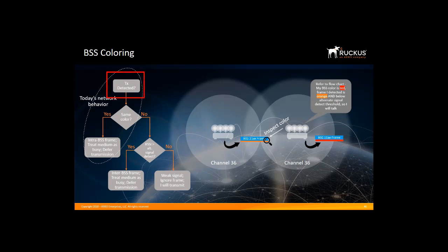If a transmission is detected, you ask: are you the same color — meaning are you in the same BSS? If yes, you treat the medium as busy, as the frame is considered an intra-BSS transmission, and the listening radio will defer transmission. This is how today's networks behave. If the color is different, then the frame is considered an inter-BSS transmission from an overlapping basic service set, or OBSS, and the listening radio treats the medium as busy only for the time it took to determine the color bit was different.